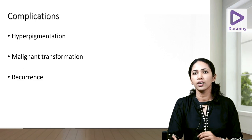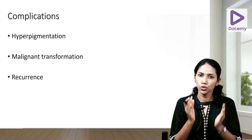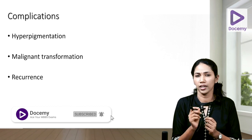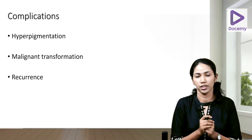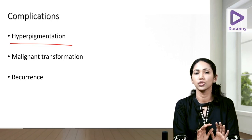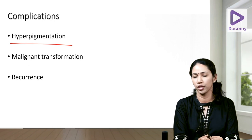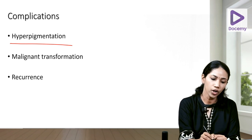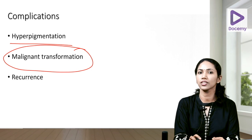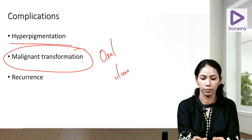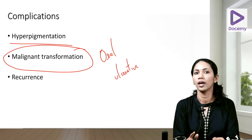Coming to complications: after treatment and remission, a striking amount of post-inflammatory hyperpigmentation is left behind, which may take months or years to resolve — this is very classical and distressing to patients. Lichen planus can also recur even if adequately treated. Regarding malignant transformation, it is not common in cutaneous lichen planus, but in oral lichen planus — especially the ulcerative variant — constant watch for malignant transformation is required.